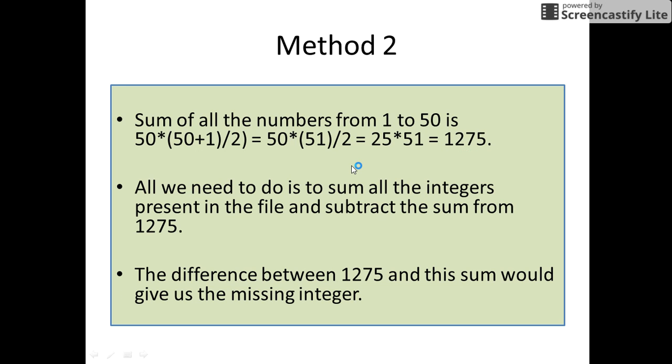Now all we need to do is sum all the integers that are present in our Excel file and subtract the sum from 1275. Now the difference between 1275 and the sum that was found out by you gives us the missing integer.